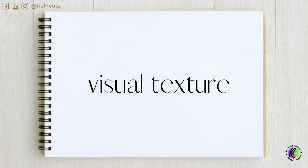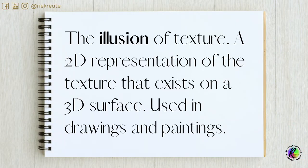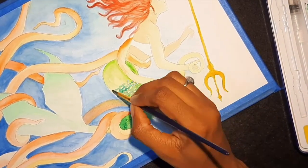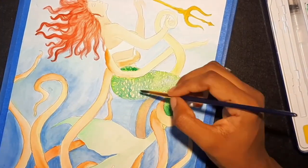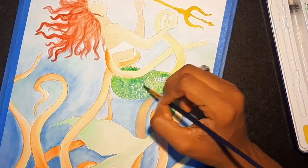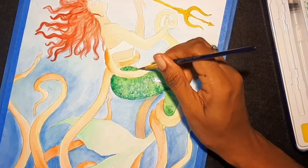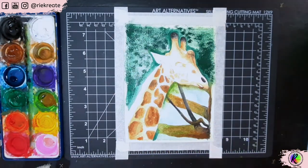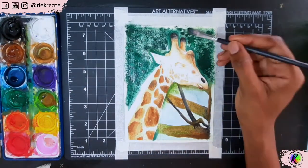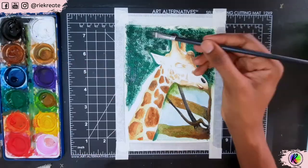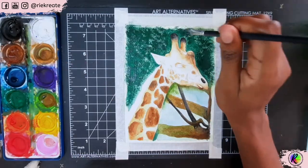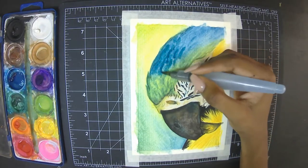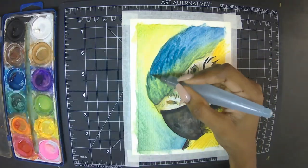Visual texture is an illusion of texture. It is a two-dimensional representation of the texture that exists on a three-dimensional surface. By using various drawing and painting techniques along with manipulating the elements of art, artists can create a flat or two-dimensional representation of what an actual, real texture looks like.